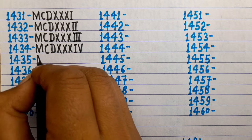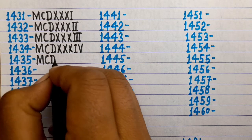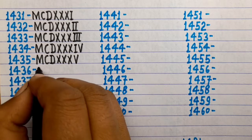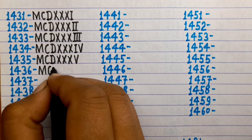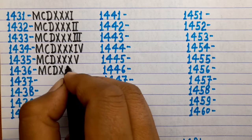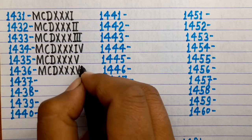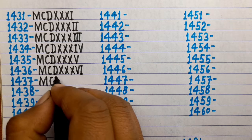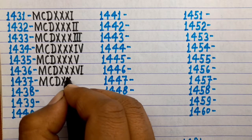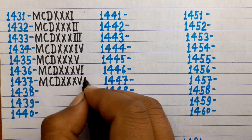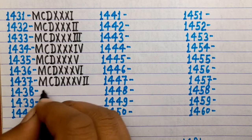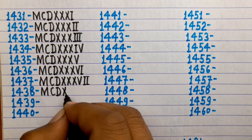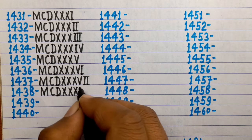1435 is MCDXXXV. 1436 is MCDXXXVI. 1437 is MCDXXXVII. 1438 is MCDXXXVIII.